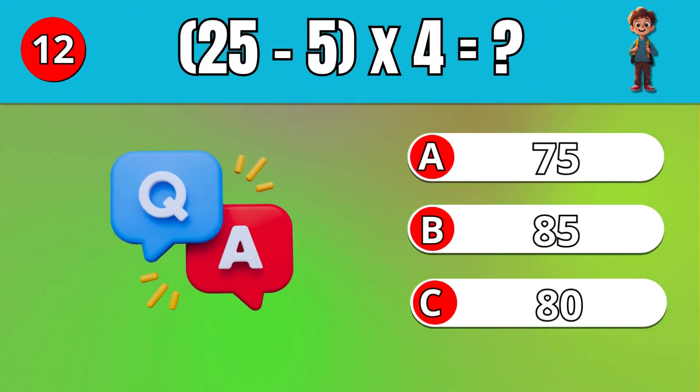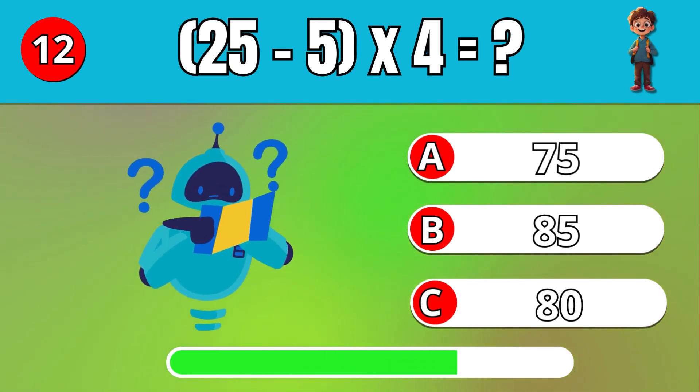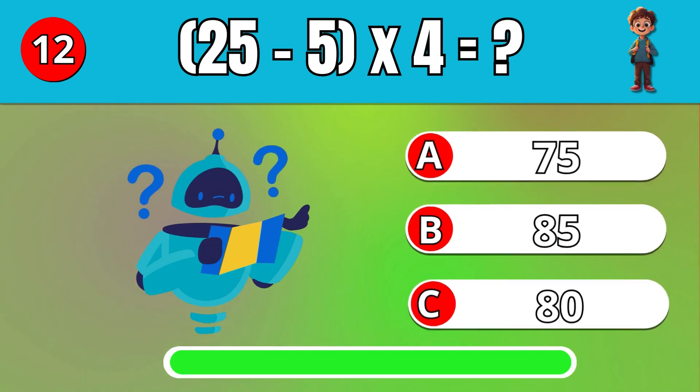Subtract 5 from 25, then multiply by 4. C, 80.